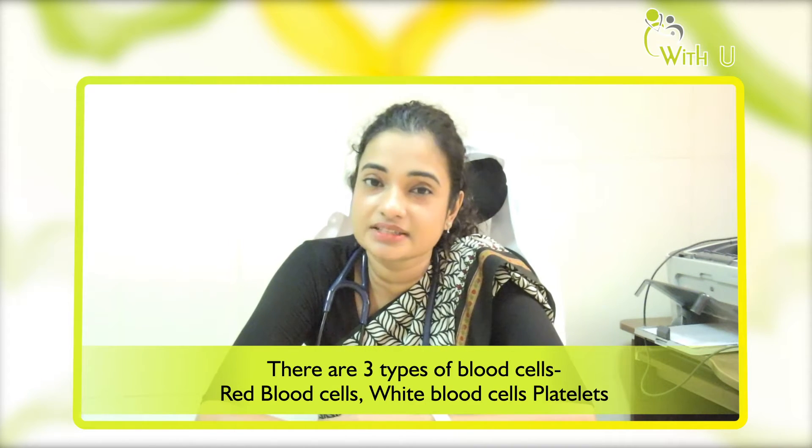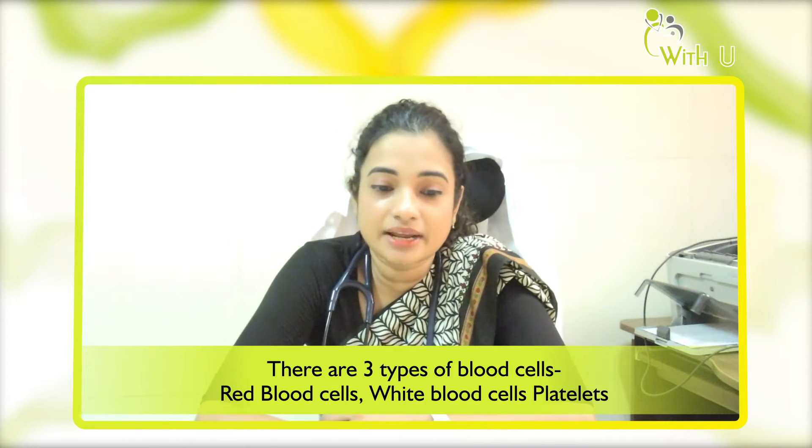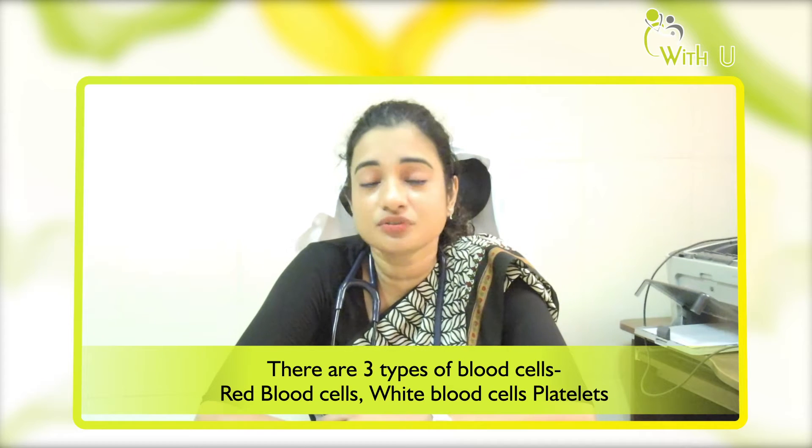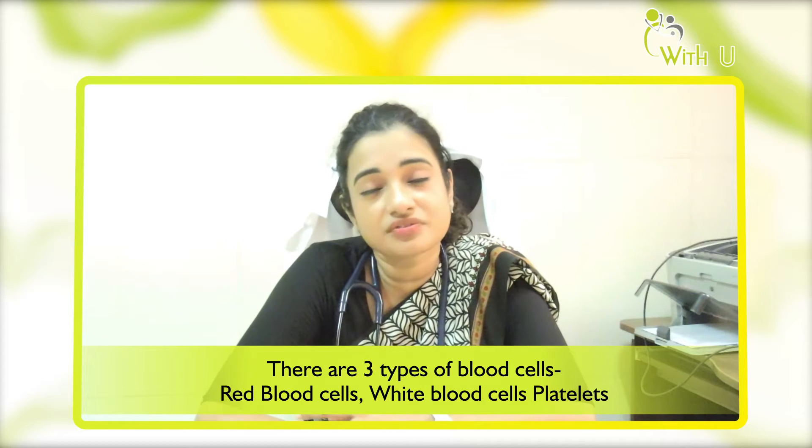So there are 3 types of blood cells: red blood cells, white blood cells, and platelets, and there are various types of cancers which affect all these types of cells. The most common blood cancers we will be talking about today are acute leukemias, lymphomas, and myelomas.